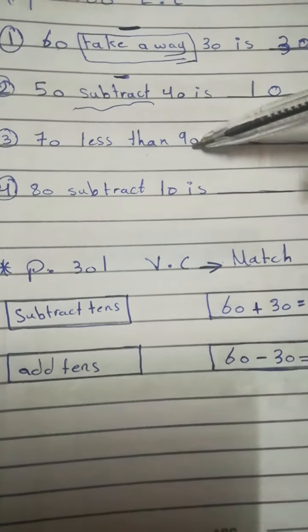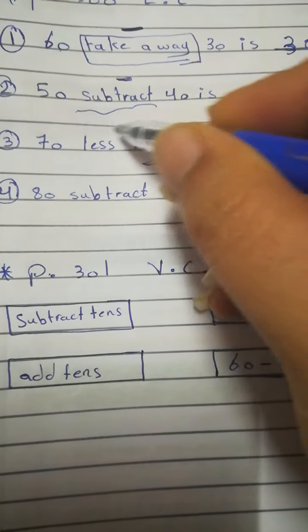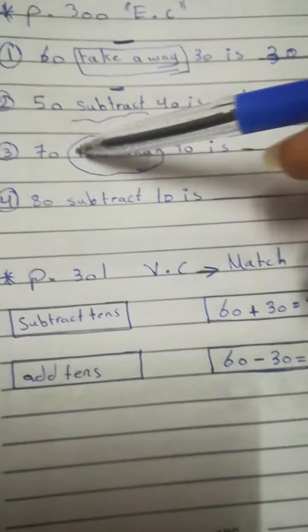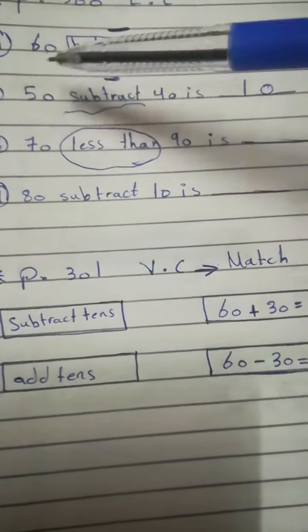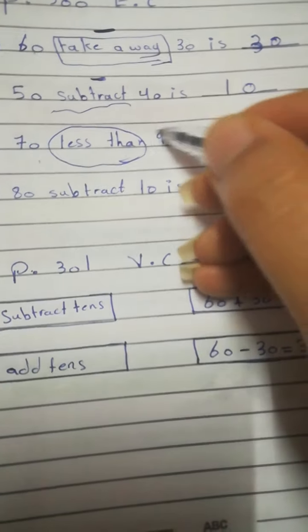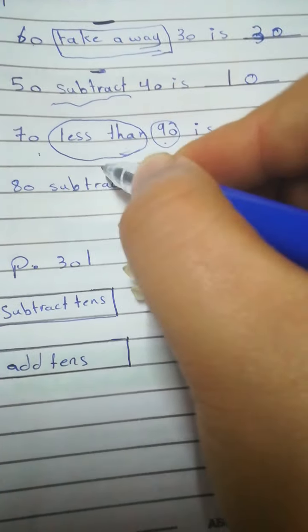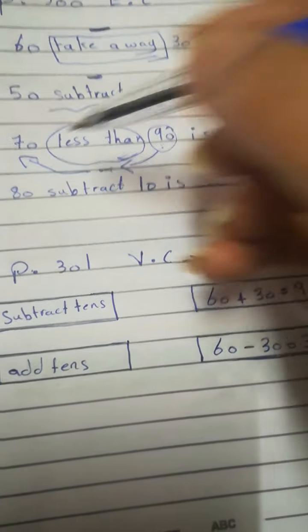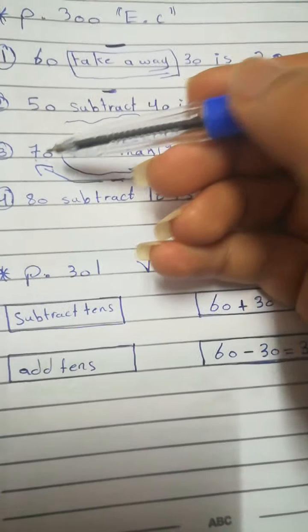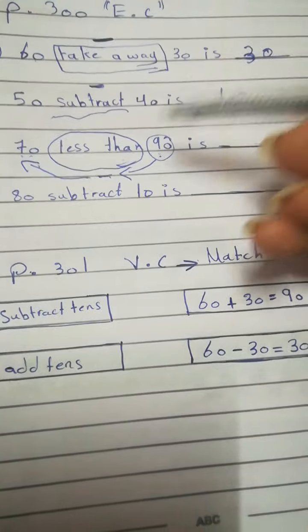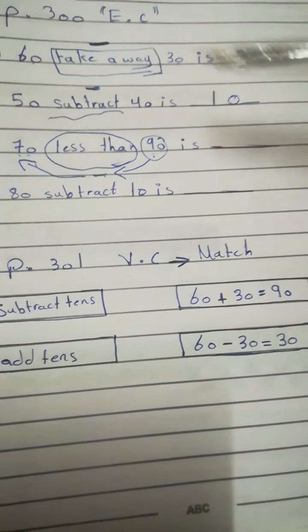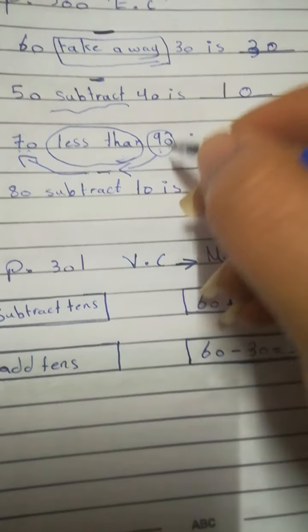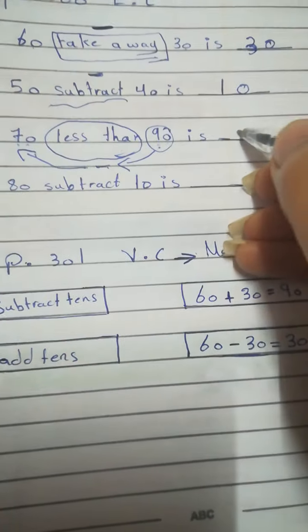70 less than 90. Less than. Look, 70 less than 90. Where is the big number? 90. So, 90 minus 70. Here is the big number. Here is the small number. And we took small number from a big number. We cannot take a big number from a small number, right? So, 90 minus 70 equals 0 minus 0 is 0. 9 minus 7 is 2.